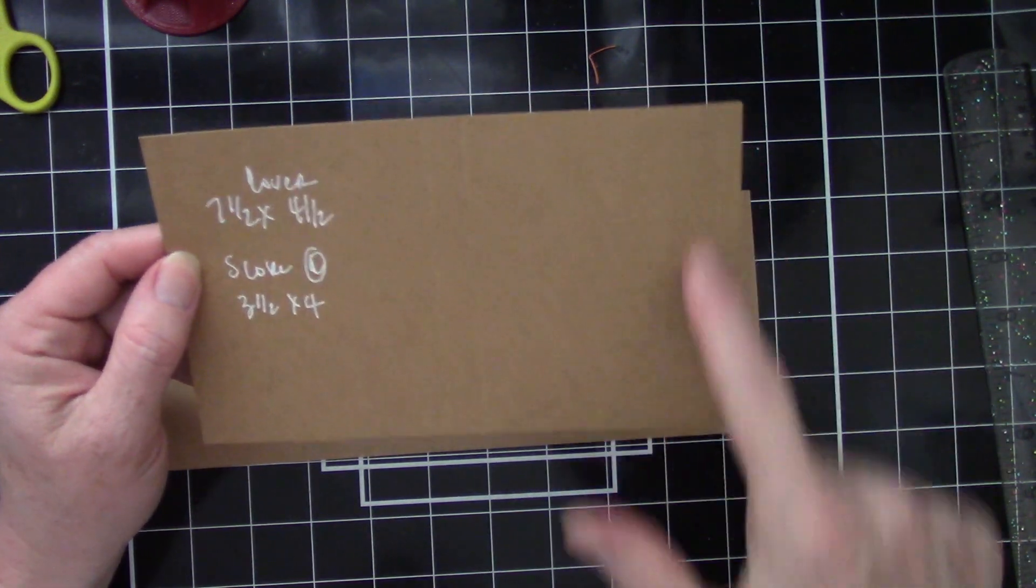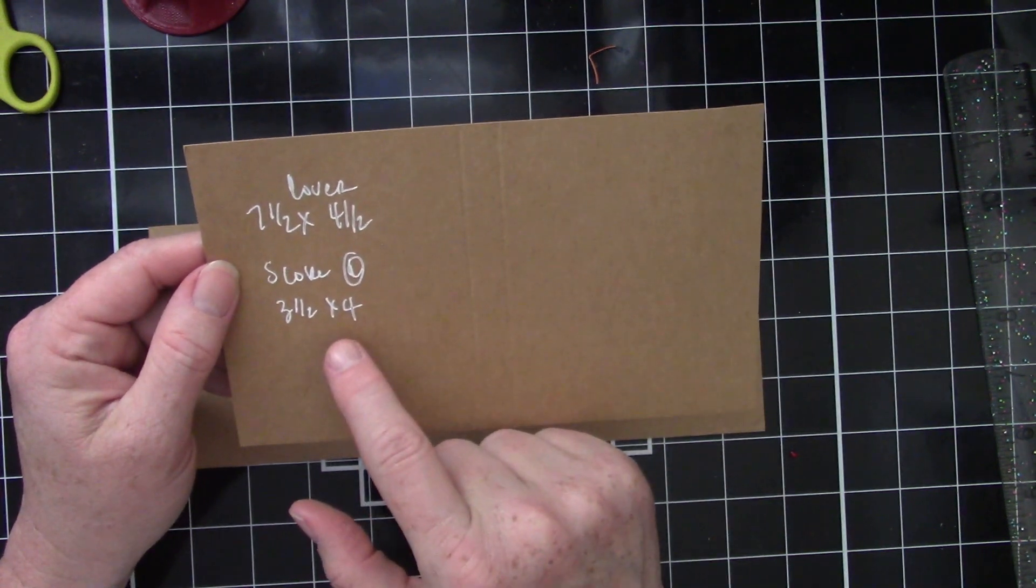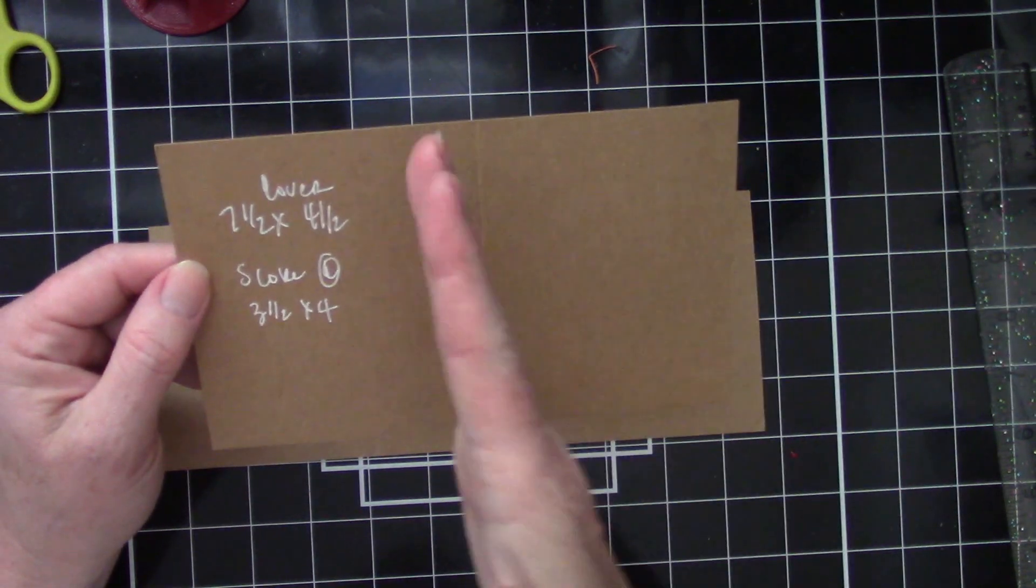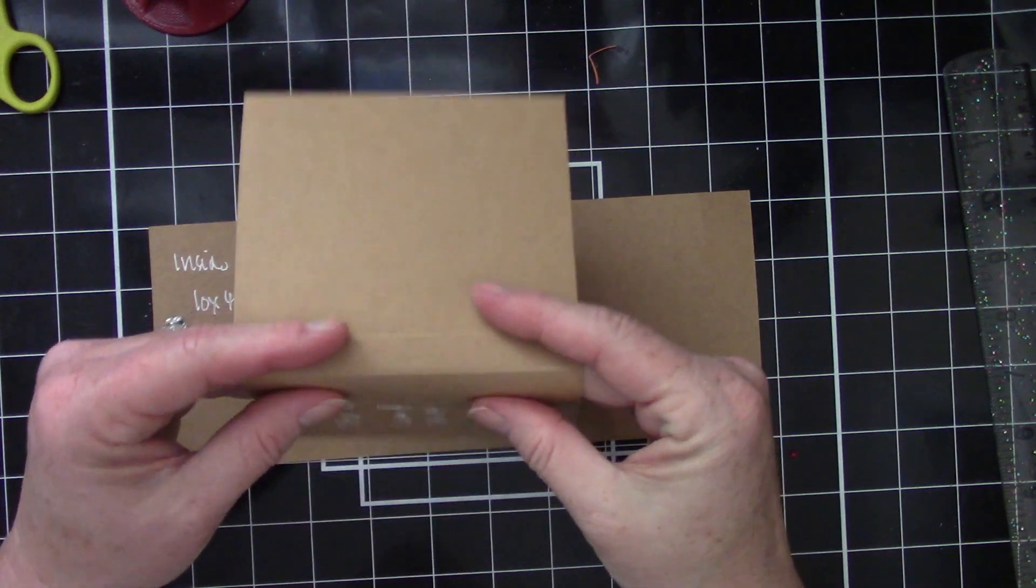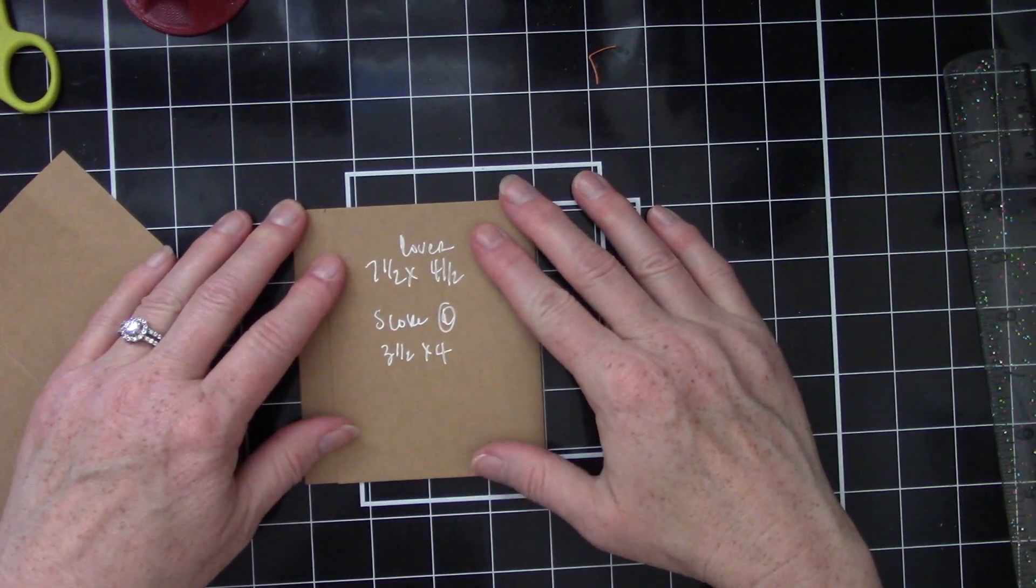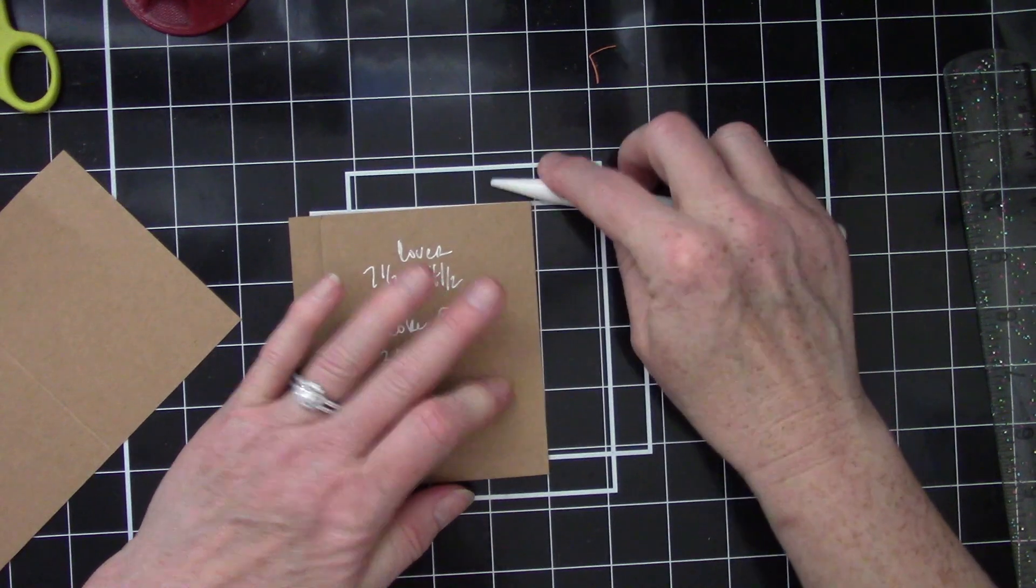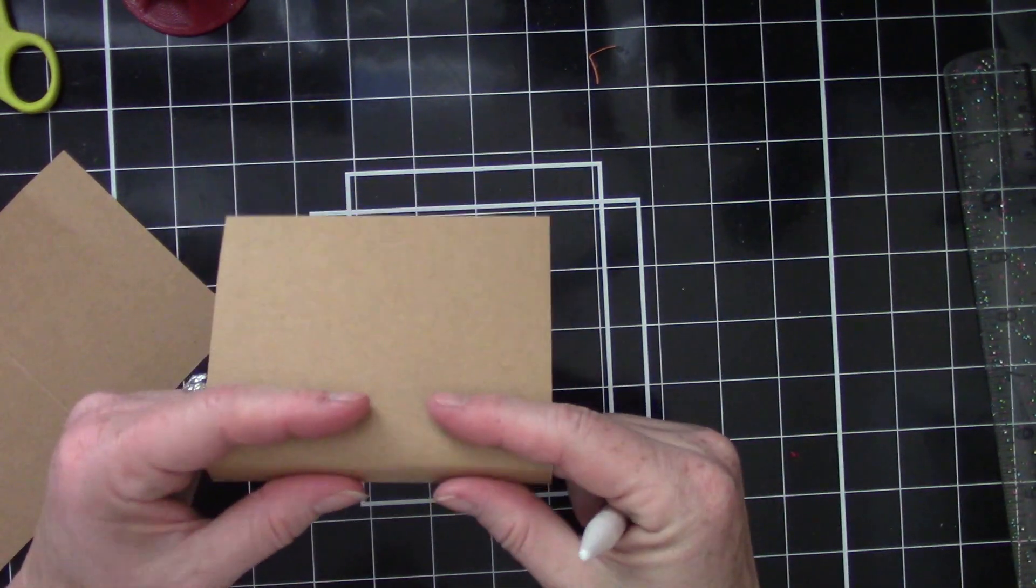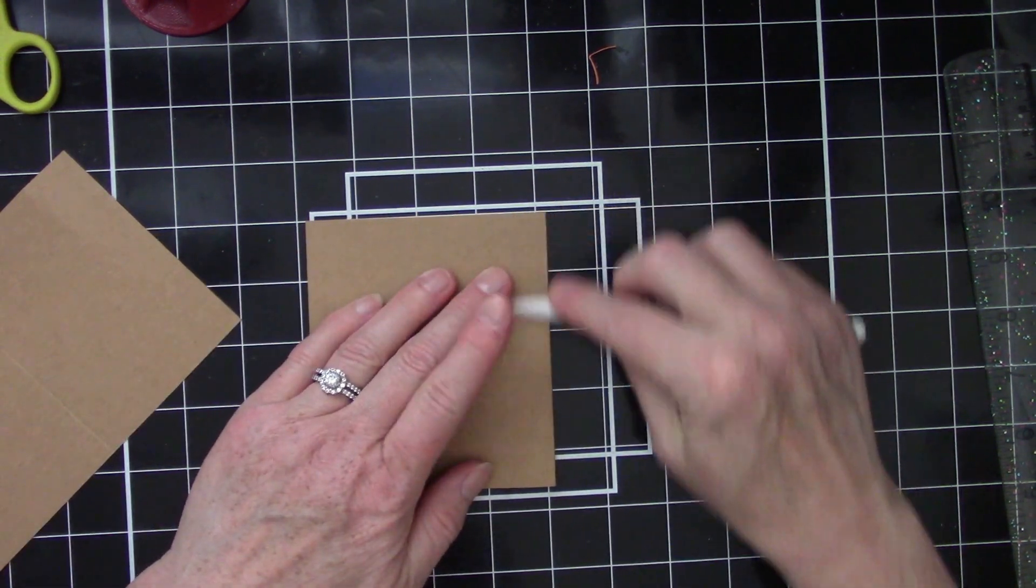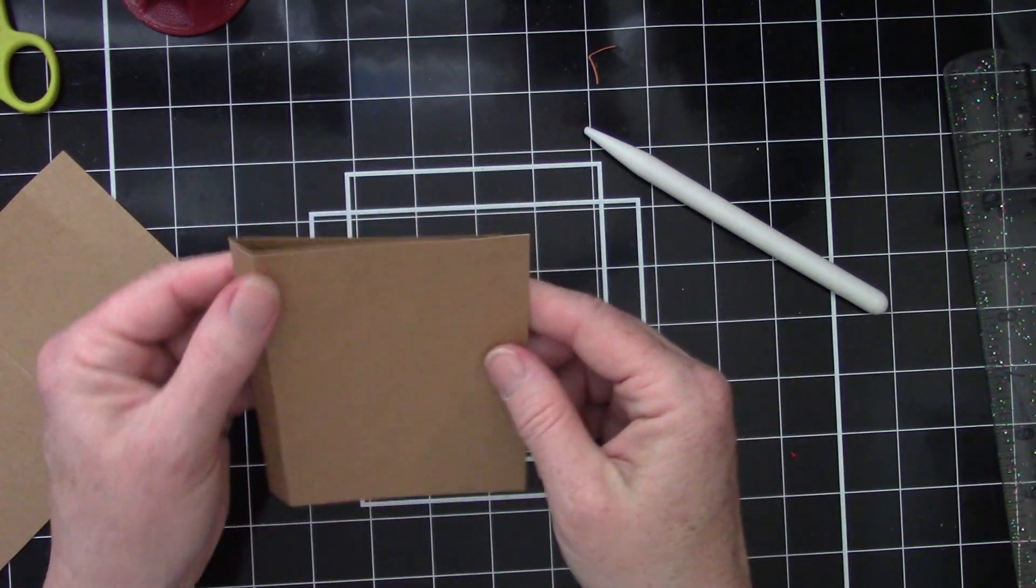Your cover is going to be seven and a half by four and a half inches - so seven and a half long, four and a half tall. And we're going to score at three and a half and four on the seven and a half length. So three and a half and four is where you'll score and that will create your spine. So it's a half inch spine on these.